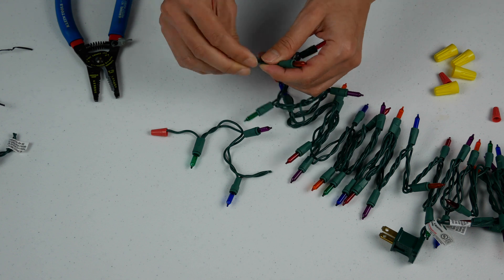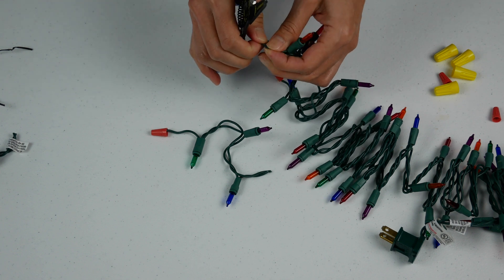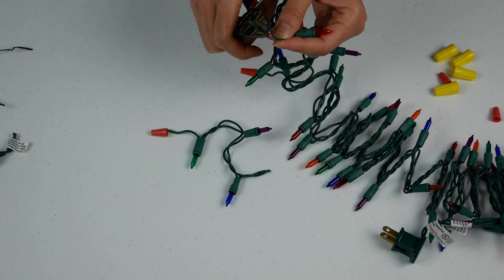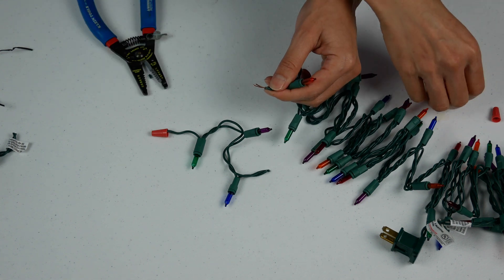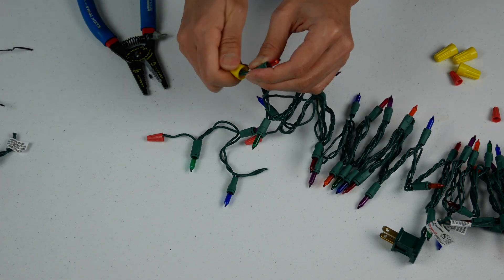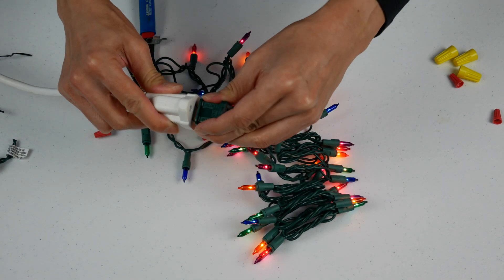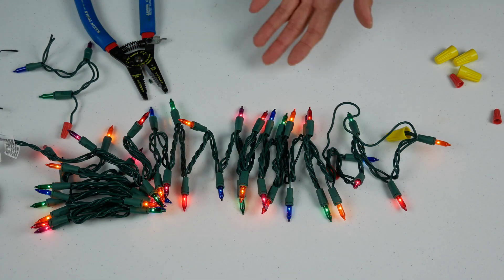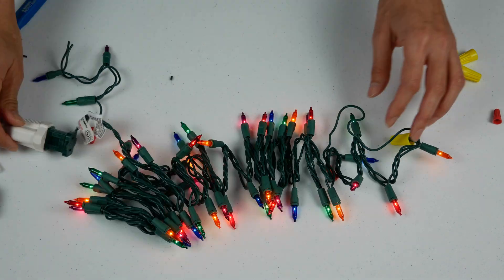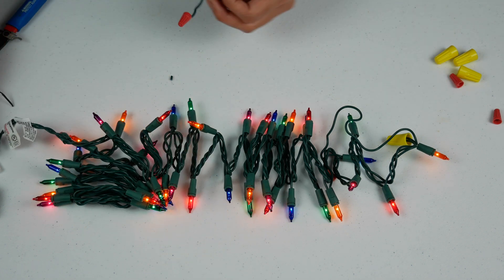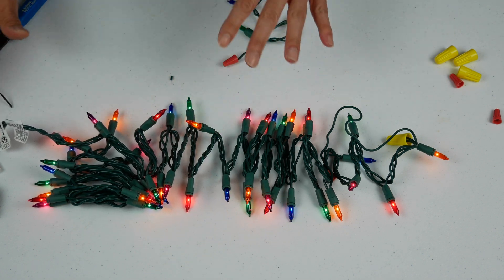Now I'm going to strip the two wires that are left and connect them with my wire nut. Let's see if that works now. Yep, they still work. Now I've removed three lights from my Christmas light. I've only removed three lights so they're not significantly brighter.